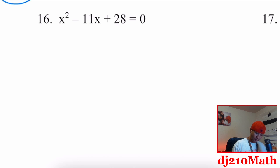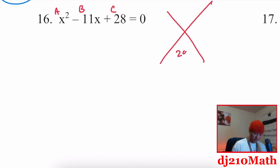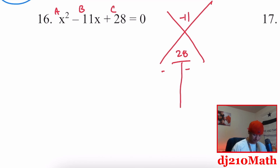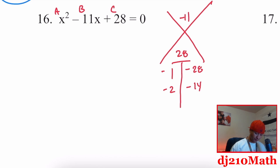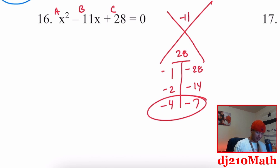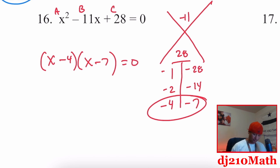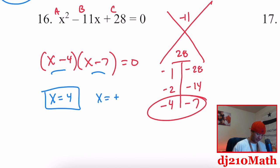Next problem: A is one. A times C is one times 28 equals 28, adds up to negative 11 — so both numbers need to be negative. Checking pairs: negative four and negative seven — negative four plus negative seven is negative 11. So factors are X minus four times X minus seven equals zero. The roots: X equals positive four and X equals positive seven.